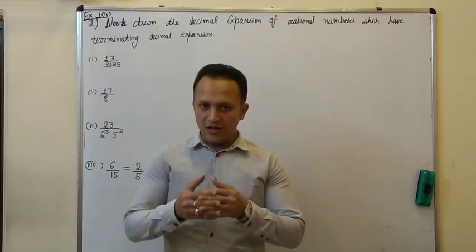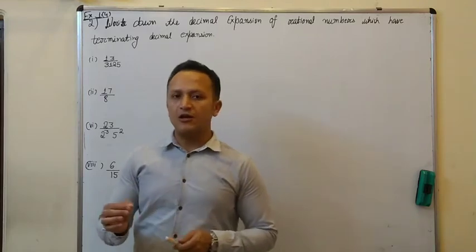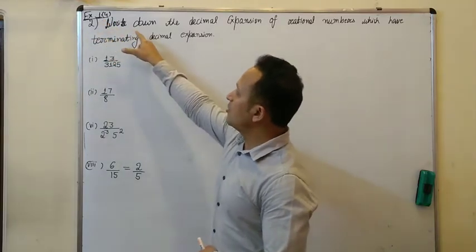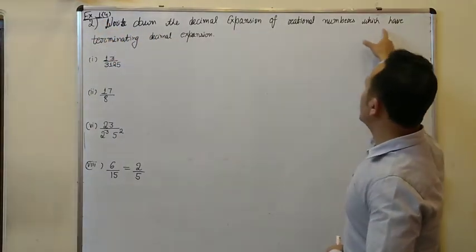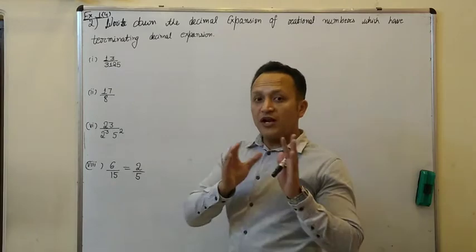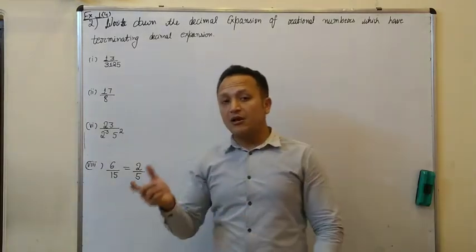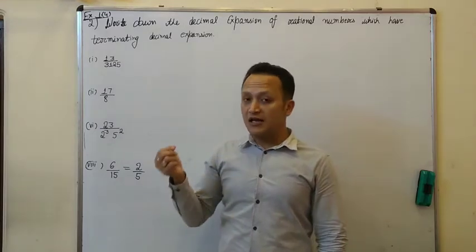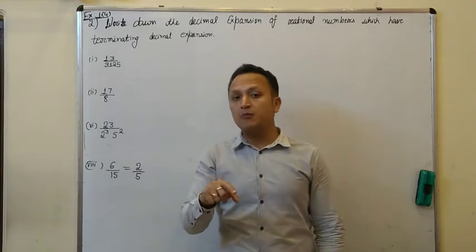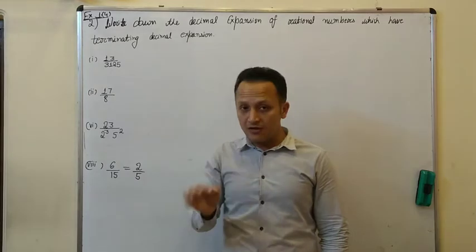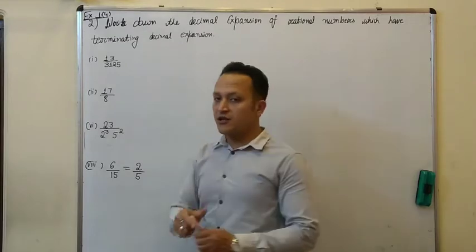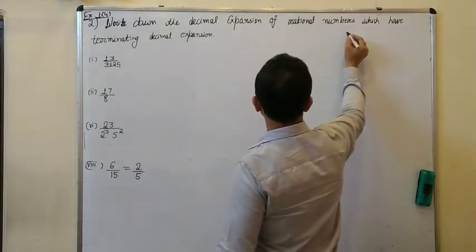Now in this particular lecture, I am going to cover question number 2 of Exercise 1.4, that is to write down the decimal expansion of rational numbers which have terminating decimal expansion. It is understood that without division, bina division ke, aakko iski decimal form likhna hai. Let's check with a basic example.